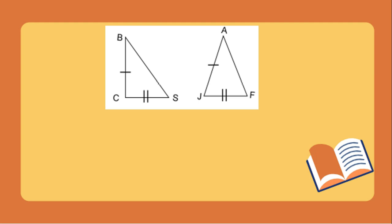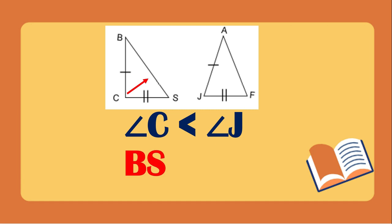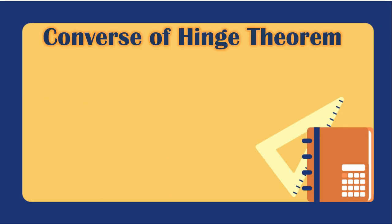In another example, angle C is less than angle J. The opposite side of angle C is BS, and the opposite side of angle J is AF. If angle C is less than angle J, then BS is also less than AF.